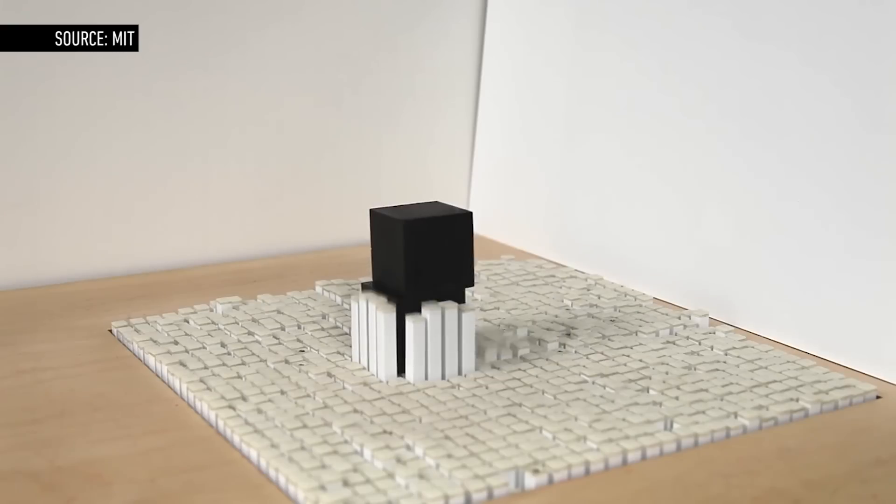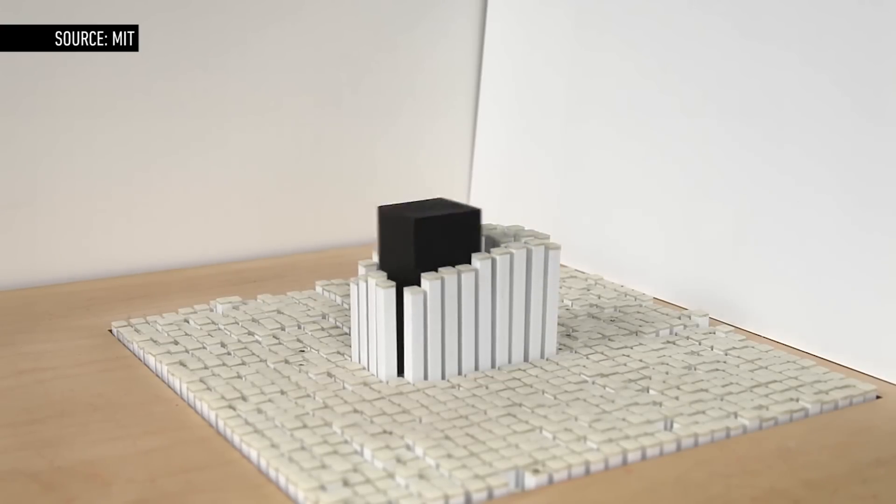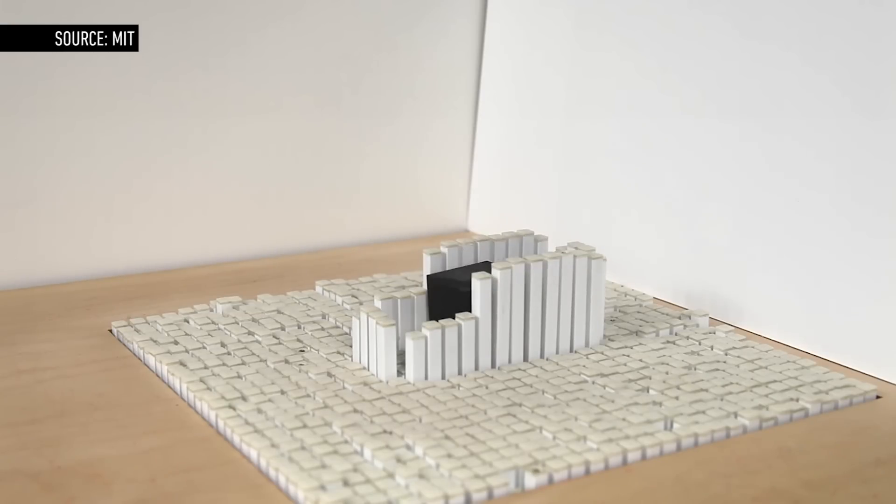But with Kinetic Blocks, MIT has ratcheted up what the display can do to make it capable of building stuff. If it's fed the right data, it can manipulate blocks, rotating them, and even stacking them on top of each other.